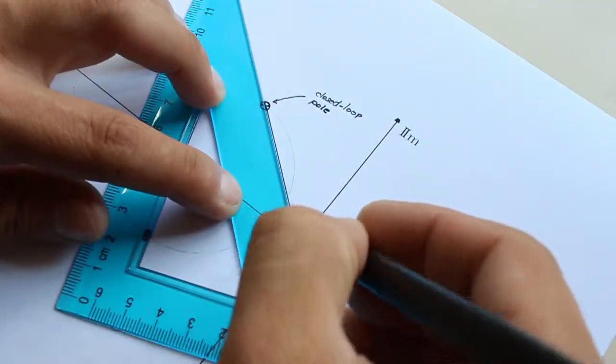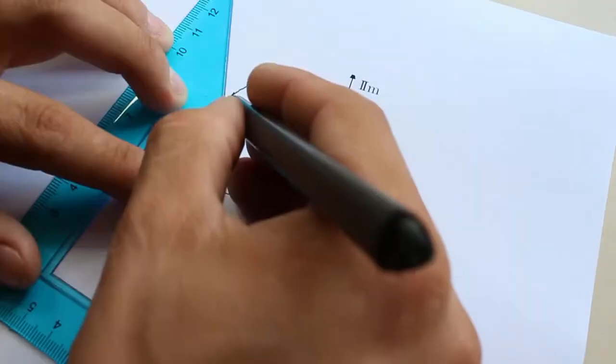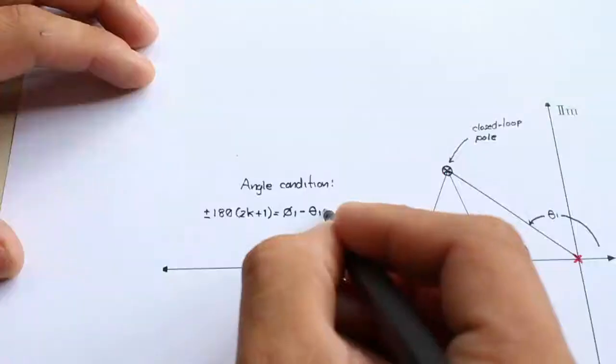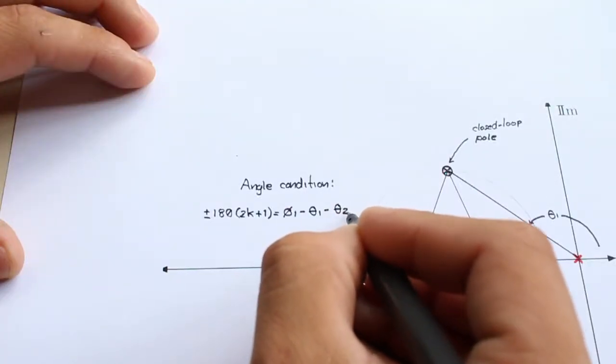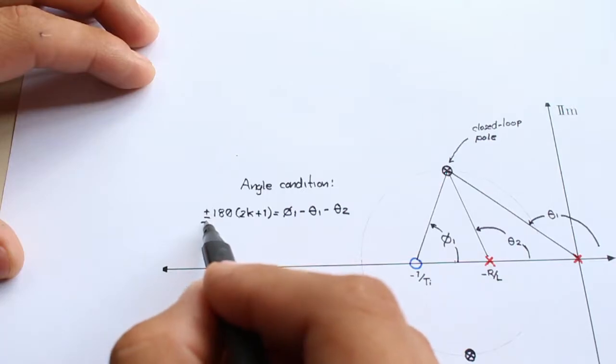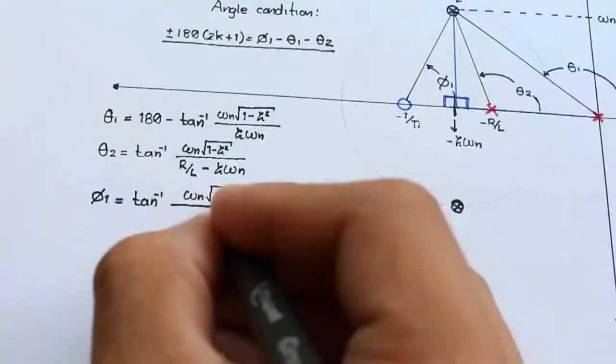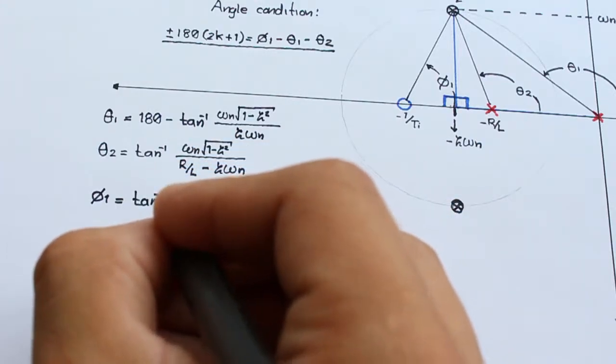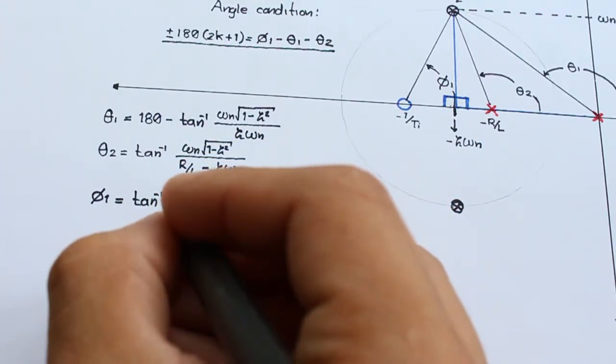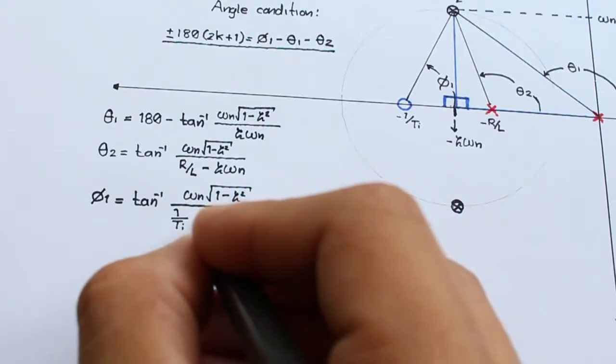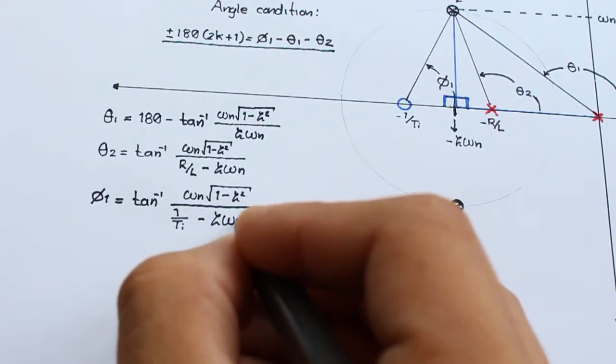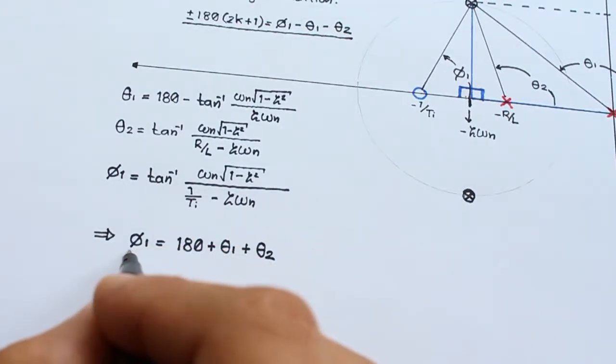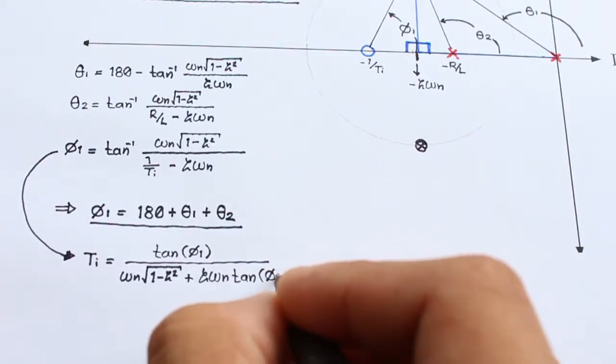The controller tuning procedure starts by measuring the angles between the open-loop poles and zeros, and the desired closed-loop poles. The sum of these angles must satisfy the angle condition of the root locus drawing rules. The angles theta1, theta2, and phi1 can be readily computed by using the Pythagorean theorem. It is possible with this formula to get the angles theta1 and theta2 for a given closed-loop pole, and then to obtain a value for phi1.